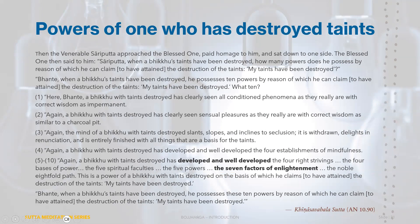In the Kinasava Sutta (Ankutunikaya, Chapter 10, Discourse 90), the Buddha asked Venerable Sariputta how many powers does a bhikkhu possess by reason of which he can claim to have attained the destruction of the taints — referring to someone who is Kinasava, one who has destroyed the taints. Venerable Sariputta responded that there are ten powers by which a person can claim this attainment. These ten powers are remarkable and incredibly inspiring — so much has been seen clearly or thoroughly with wisdom, so much of the unwholesome has been abandoned, and all wholesome dhammas have been fully perfected. One of the ten powers is that such a person has developed and well-developed the seven factors of enlightenment.